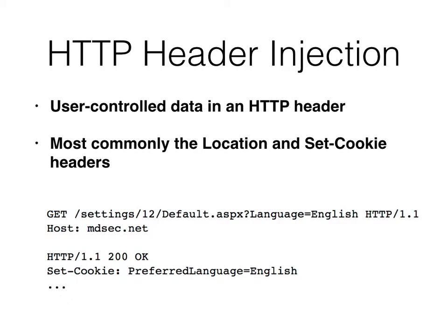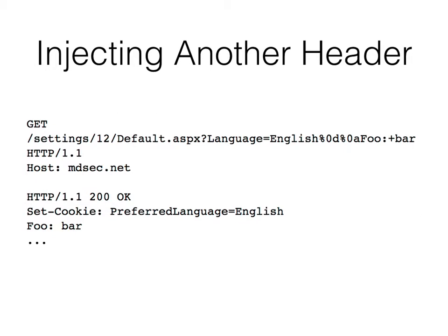These are things that inject data into the client and confuse it. Now this one is kind of an old trick — HTTP header injection. Suppose you put in something like here you specify your language as English, and then that's used in the header to set a cookie: preferred language equals English. Now that would be fine, but if it's possible to inject line feed carriage return into it, then you can inject extra lines in the header and inject another whole header. So you could put in any parameters you want here, like foo and bar.